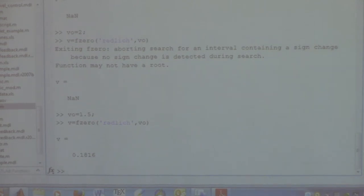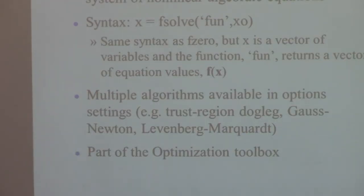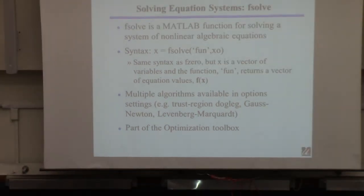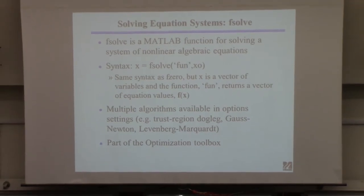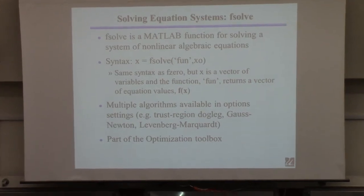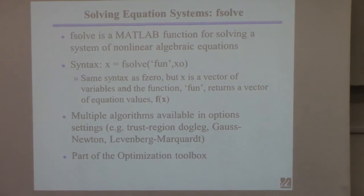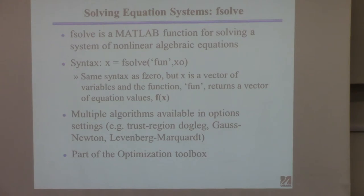To solve a system of equations — more than one function, more than one unknown — use fsolve, available in the optimization toolbox. If you got the student version legitimately, you have it. When your research group buys MATLAB, each toolbox costs about $400; students get ten toolboxes plus MATLAB for $99. The only limitation is it won't solve very large matrix problems, but for everything in this course it's a bargain.